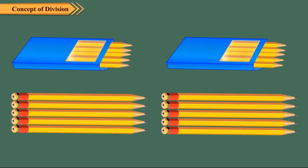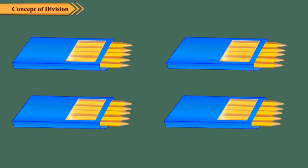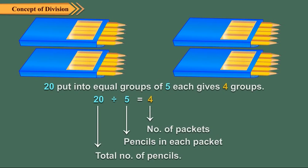Five more in another packet. Then five more in yet another packet. And finally five more in another packet. Now, there are no pencils left. So we can say that 20 pencils put into equal groups of five each gives four groups.